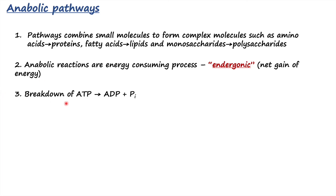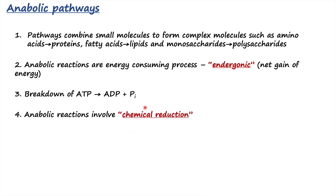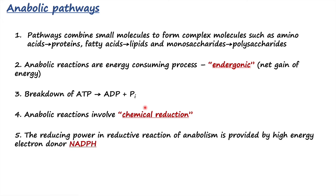Because anabolism is an energy-consuming process, energy is provided by breaking down ATP into ADP and inorganic phosphate. These anabolic reactions also involve chemical reduction, meaning these pathways are reductive — as opposed to the oxidative catabolic pathways. An important reducing power required in reductive reactions is NADPH. NADPH is a very high-energy electron donor that is crucial for synthesizing complex molecules.